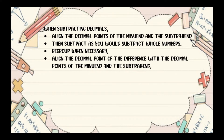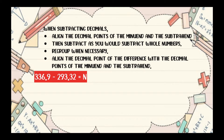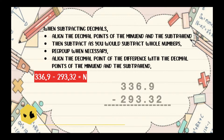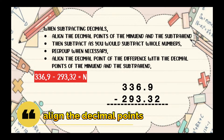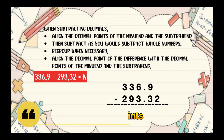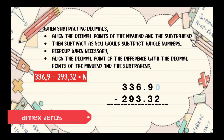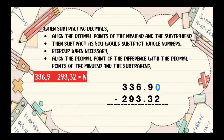Let's have an example. For example, 336.9 minus 293.32 is equal to n. What do you think is the difference? The first thing that we need to do is to align the decimal points of the minuend and the subtrahend just like this. Then let's annex the 0 so that we will have the same number of decimals. So we can now subtract them.